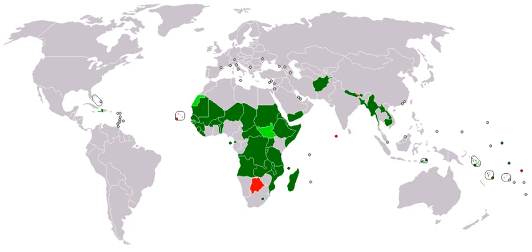Climate vulnerability in developing countries occurs in four impact areas: health, extreme weather, habitat loss, and economic stress. A report by the Climate Vulnerability Monitor in 2012 estimated that climate change causes 400,000 deaths on average each year, mainly due to hunger and communicable diseases in developing countries. The economies of least developed countries lost an average of 7% of their gross domestic product for the year 2010, mainly due to reduced labor productivity.